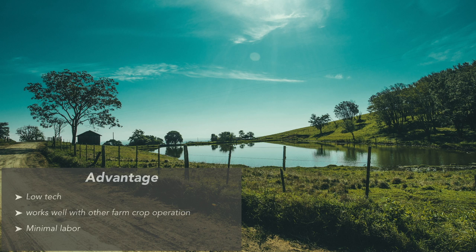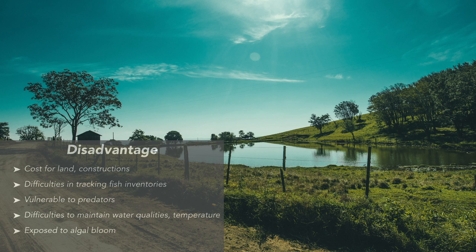In terms of labor, ponds require very minimal labor compared to tanks and cages, as they are not very technical and only a few people are required to manage a few acres of pond. The disadvantage? If you don't have land to build, it might cost a hefty price — though sometimes it's not. Construction costs can also be a little higher depending on the land. However, running the system is a totally different story, as it will cost much lower than a recirculating system or cages.